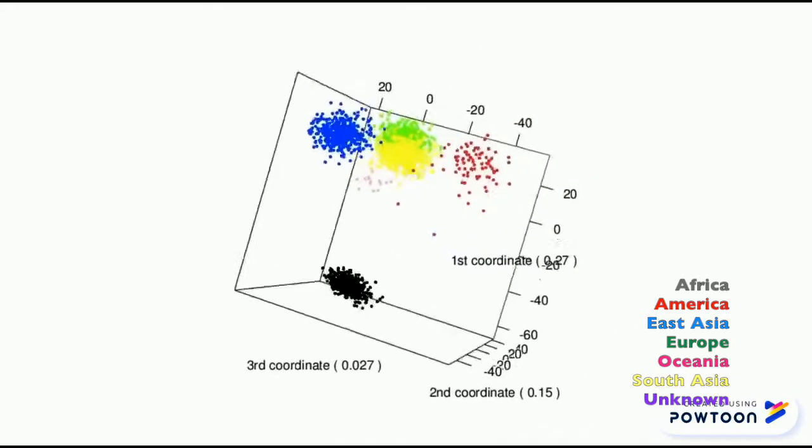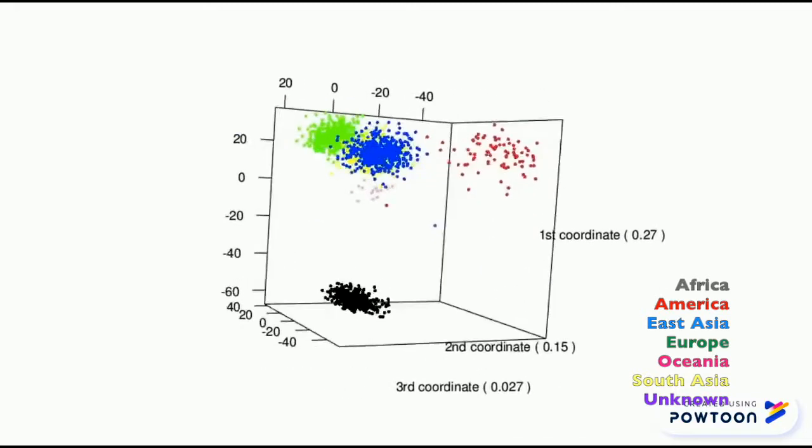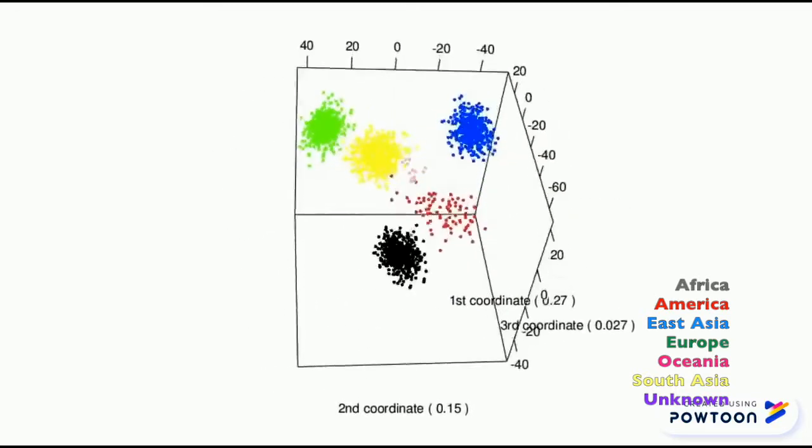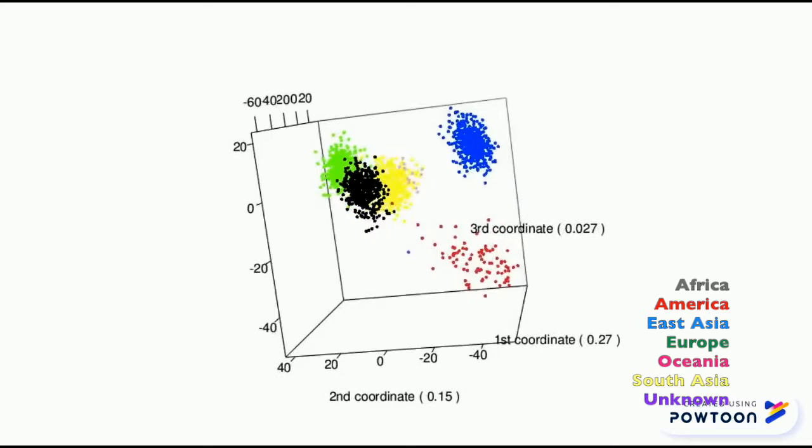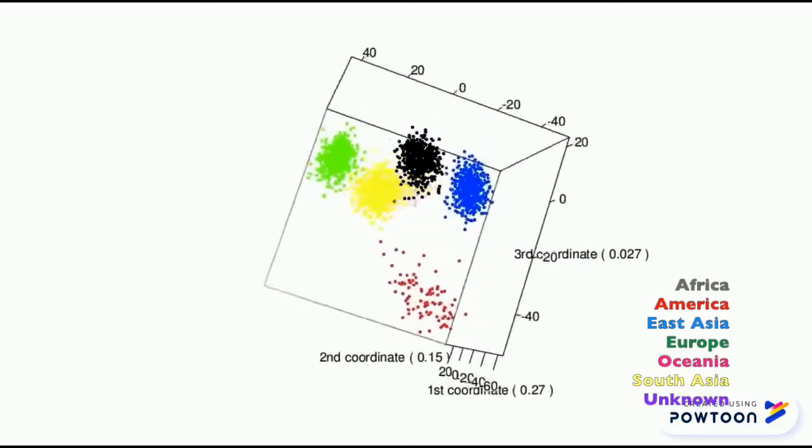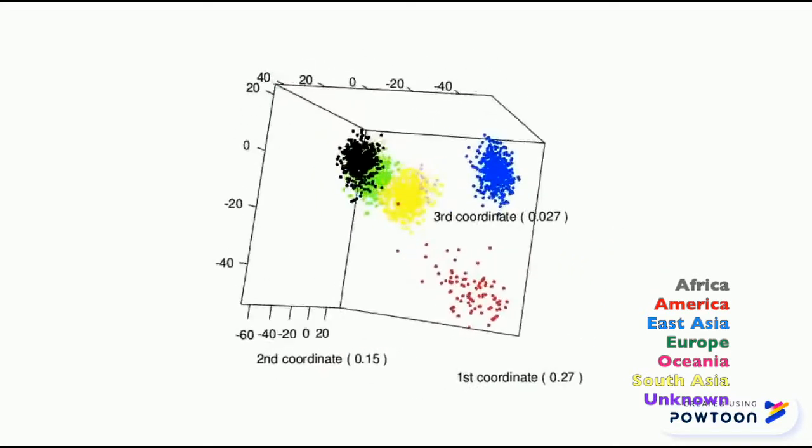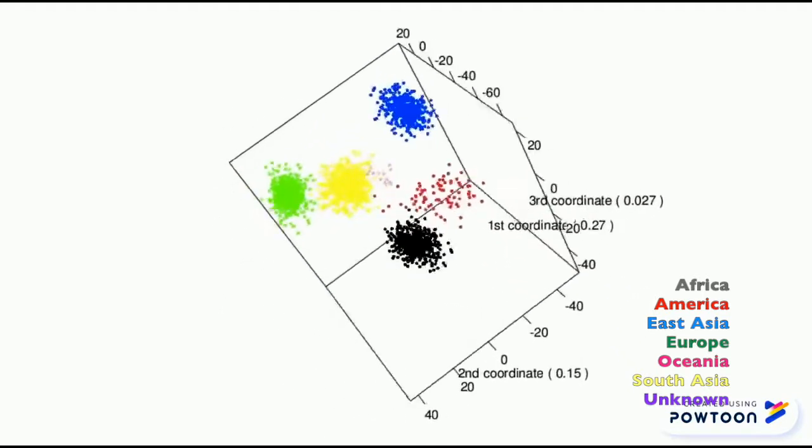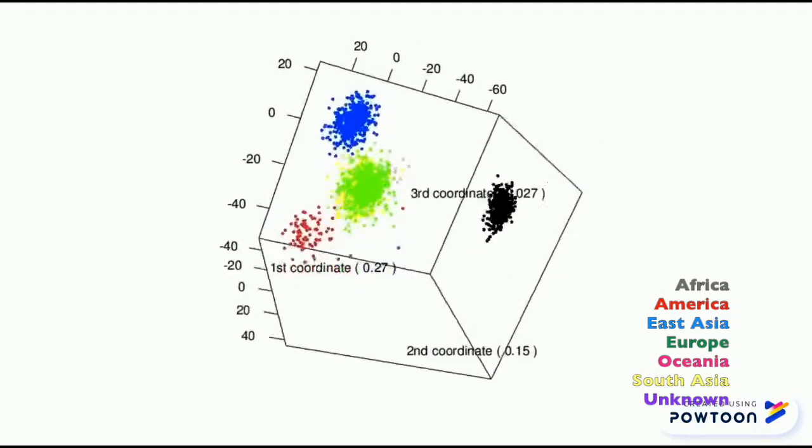In the first and second coordinate, our individual in the purple could be American, Oceanian, East Asian, or South Asian. From another perspective, they could be American, Oceanian, or South Asian. Or, from the third perspective, American, Oceanian, African, or South Asian.